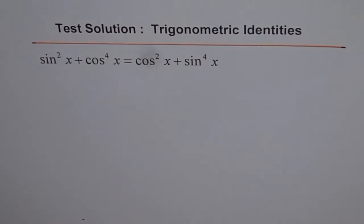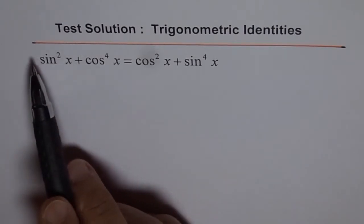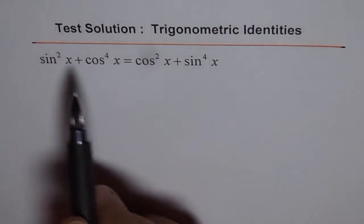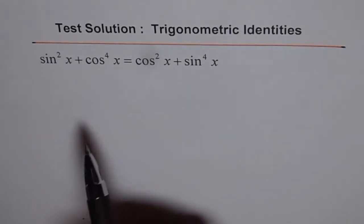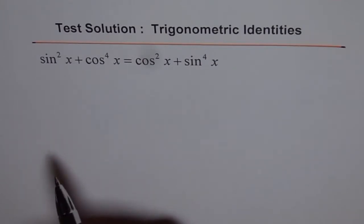Test solutions — trigonometric identities. We had a test problem with this orange line, and here are the solutions for those problems. There were five problems on trigonometric identities in this test, and these are the five consecutive videos on their solutions.